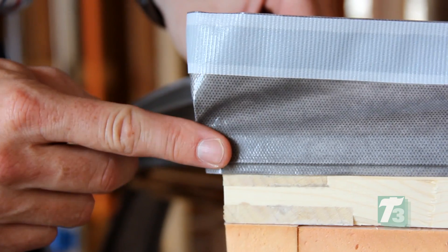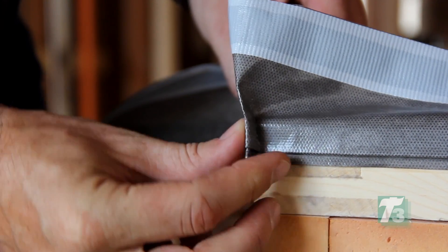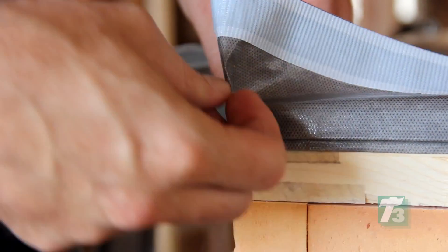Create folds at the corners to accommodate the rough opening, and run the membrane in a continuous length around the window perimeter.